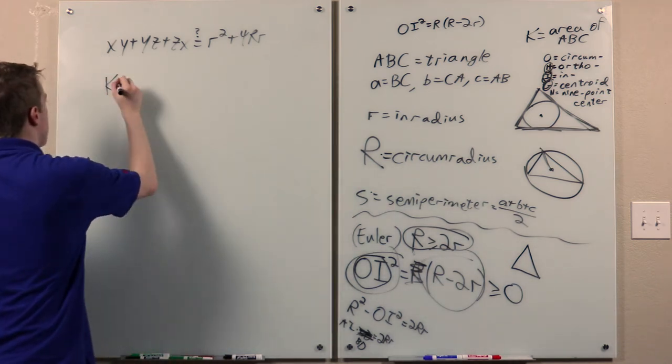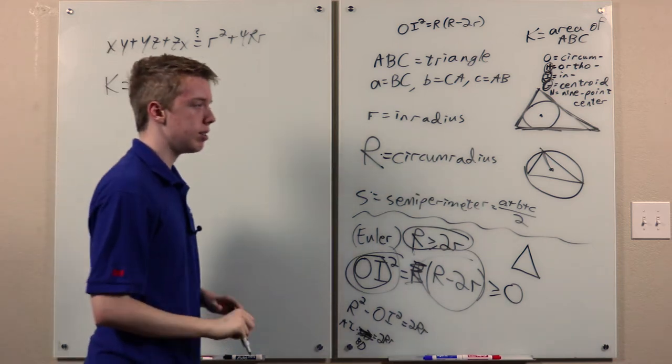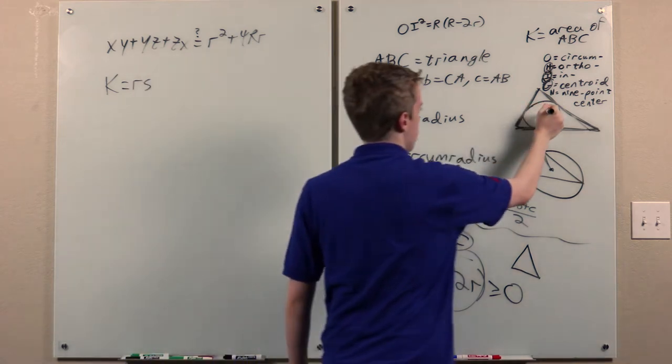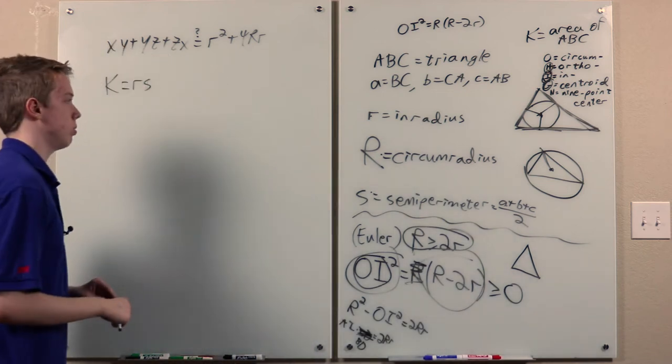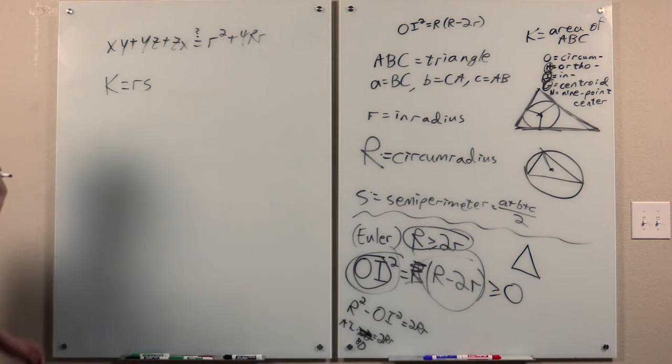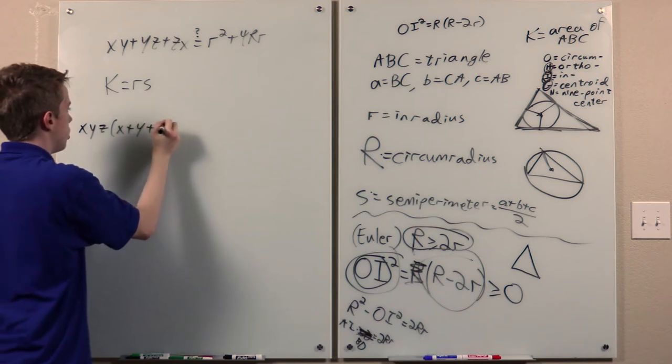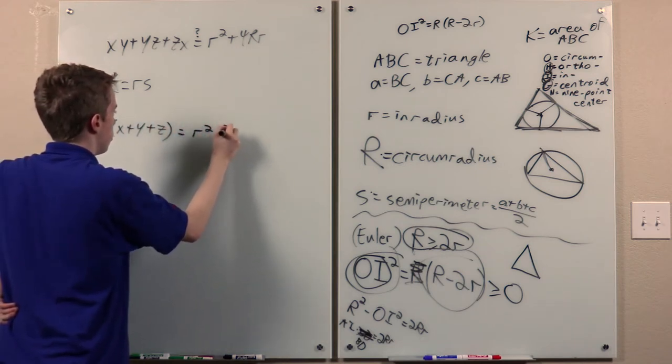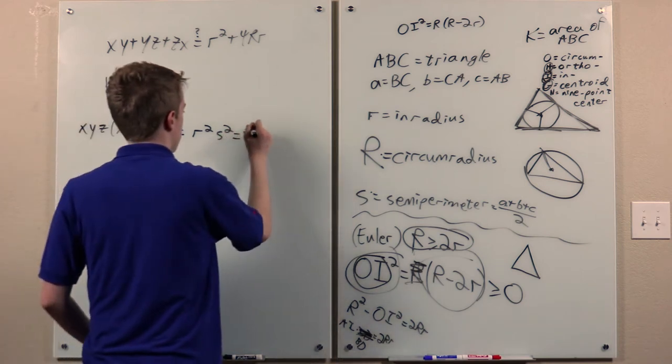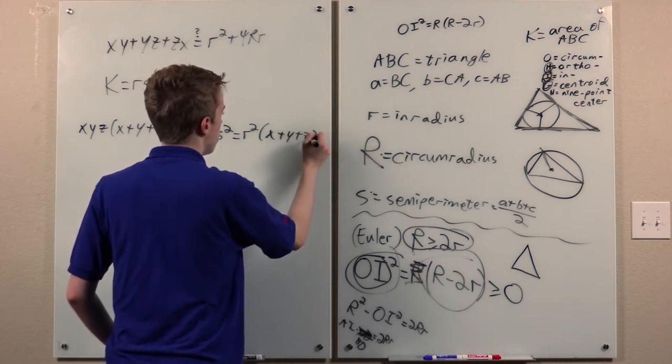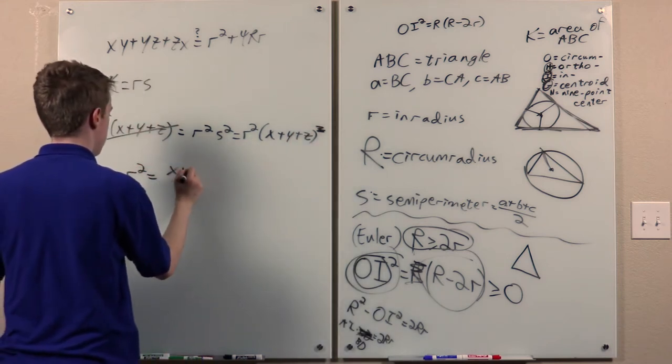Now, we know k equals rs. This is a standard formula. Like breaking up the triangle into aib and aic and bic and then using base times height over 2 to compute each area. But it's ar over 2 plus br over 2 plus cr over 2. So rs. So we know that k squared is this. But s squared is this. And x, y, and z are positive. So we can cancel this from both sides. So r squared is this.